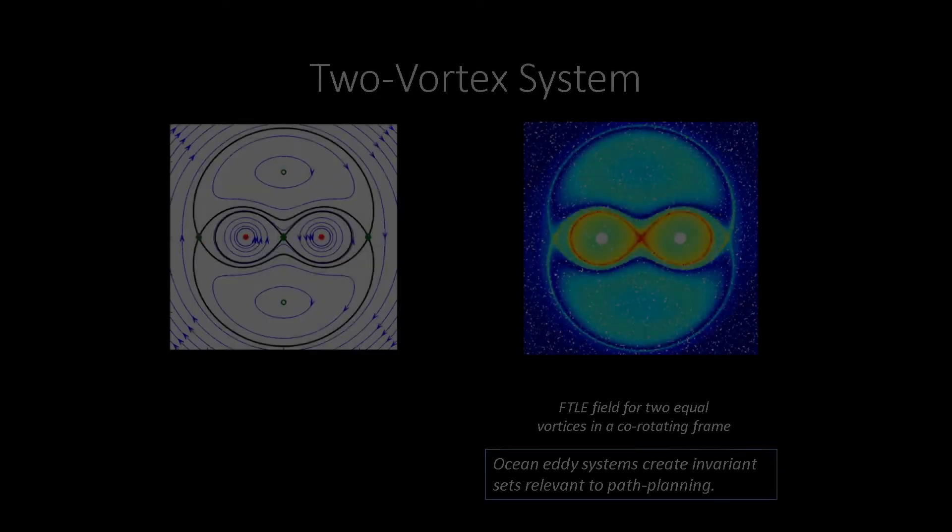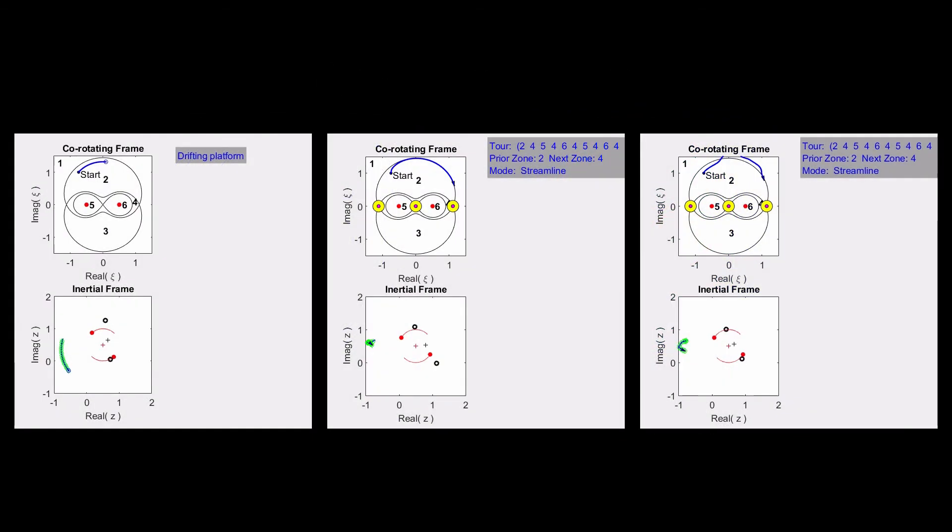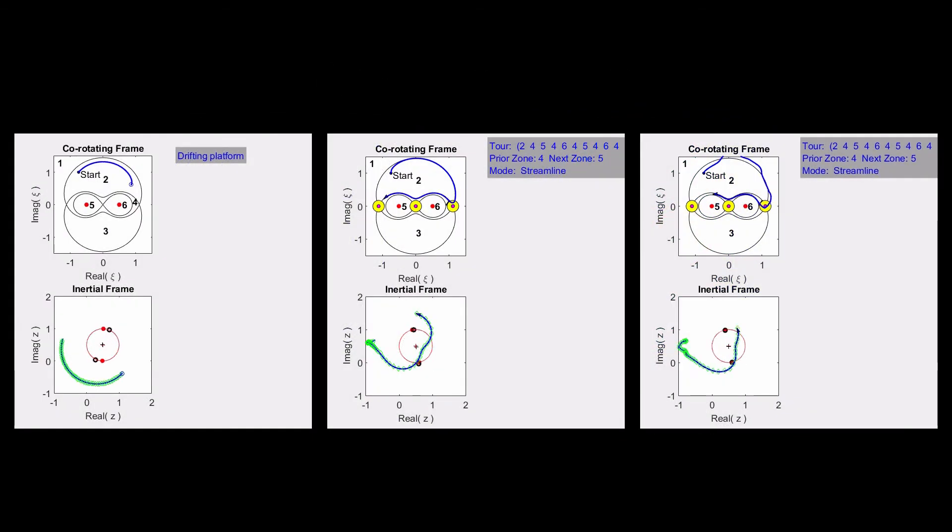And the two vortex system is interesting because your vehicle needs to understand where it's feasible to sample as well as where it's most informative to sample. You can see here that the vehicle estimates of the vortex locations are shown as black circles, and the truth is shown as red circles.